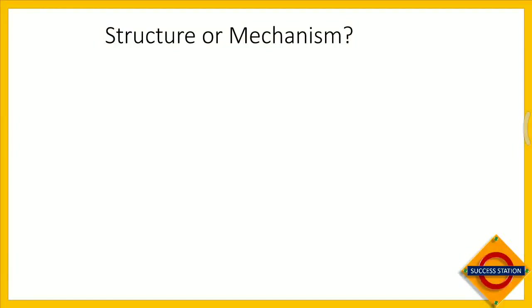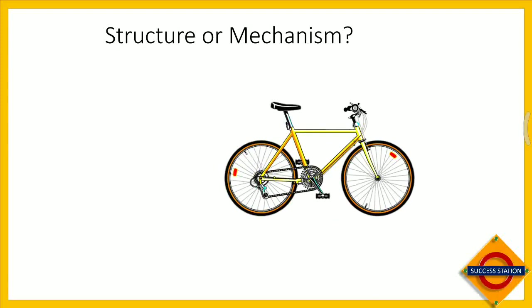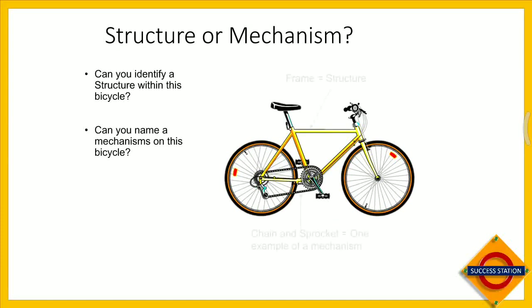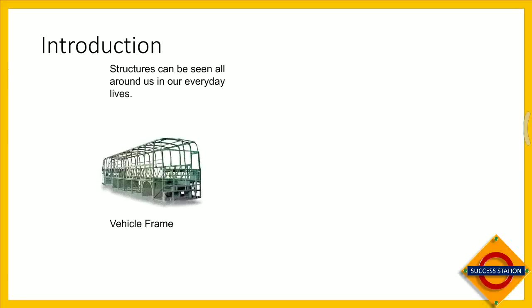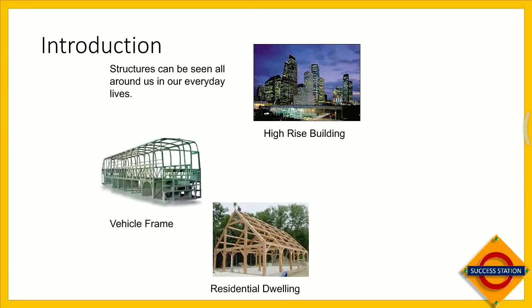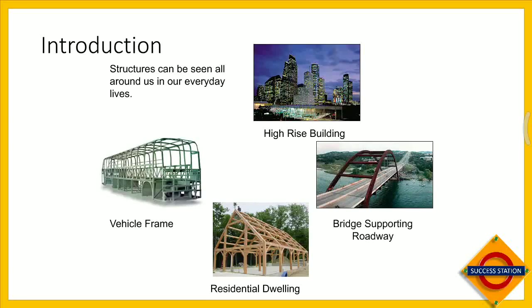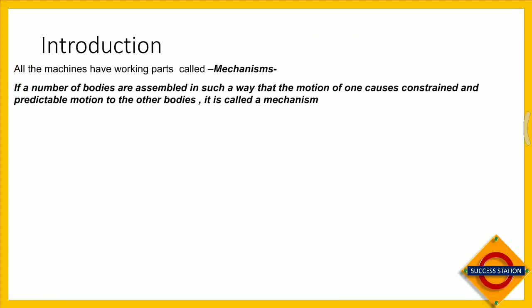Today we will be dealing with machines, mechanism, and structure — basically the difference between the three. A cycle is a machine. The chain and sprocket is the mechanism, and the frame is the structure. Structures include buildings, bridges, vehicle frames — but a vehicle frame alone cannot move. What is missing to make it a machine? Mechanisms.